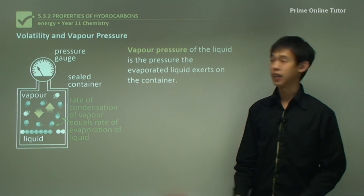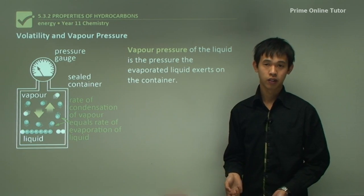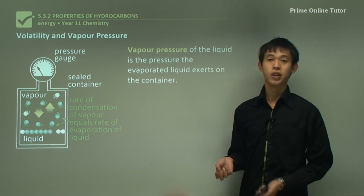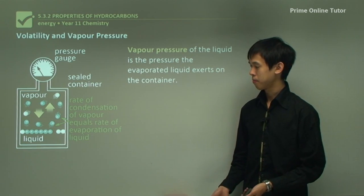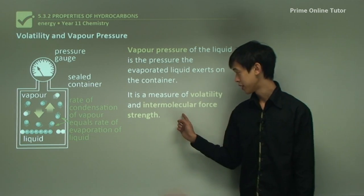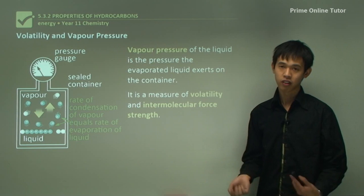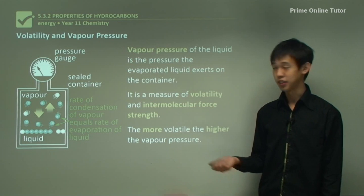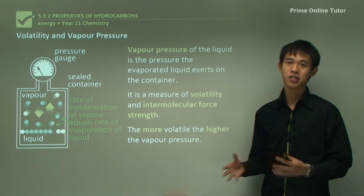Another way of thinking about it: vapor pressure is the pressure at which a liquid will turn to gas at a given temperature. For something with very low vapor pressure at say 25 degrees, you need a very low external pressure to allow it to turn to gas. Vapor pressure is a measure of both volatility and intermolecular force strength. The more volatile a substance, the higher the vapor pressure — more volatile means more gas, more gas means more collisions, and more collisions means bigger pressure.